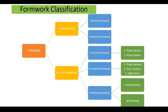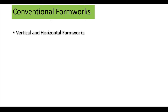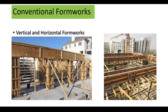Conventional formwork — as I told you, there is vertical and horizontal. You can see it is fully wooden; sometimes they will use some metallic components also. This is a very simple but very time-consuming procedure, and it is cheaper than system formwork. You would have seen this in various sites — most small sites use conventional formwork because it is very cheap for them.